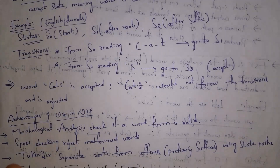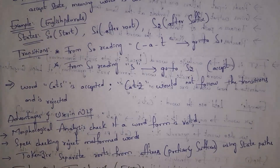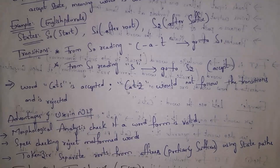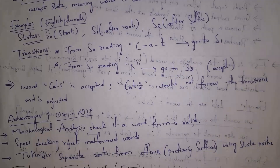The advantages of the finite state morphological model are: first, it can check whether a word is valid or not; second, it can also check spellings; and third, it can separate the root word from prefixes and suffixes — for example, when given 'cats', it can separate it into 'cat' plus 's'.